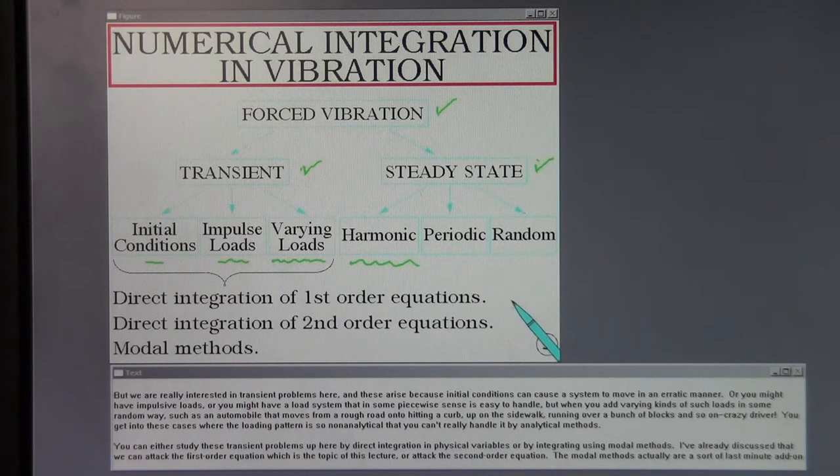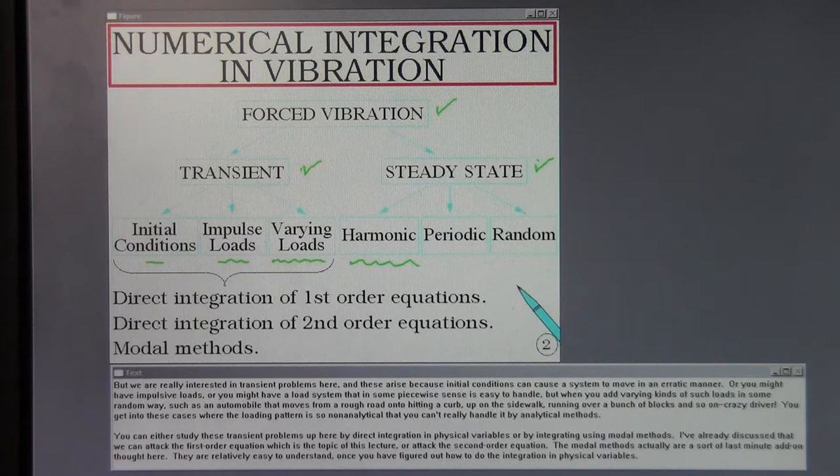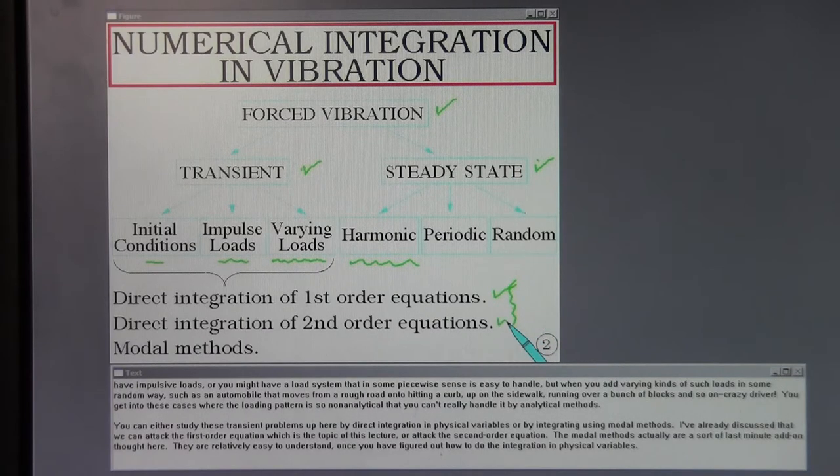You can either study these transient problems by direct integration in physical variables or by integrating using modal methods. I've already discussed that we can attack the first-order equation, which is the topic of this lecture, or attack the second-order equation. The modal methods are relatively easy to understand once you have figured out how to do the integration in physical variables.